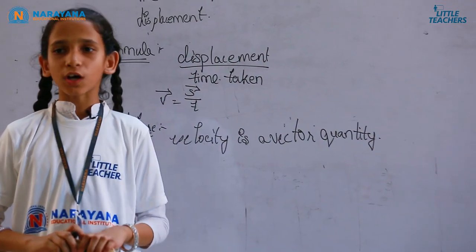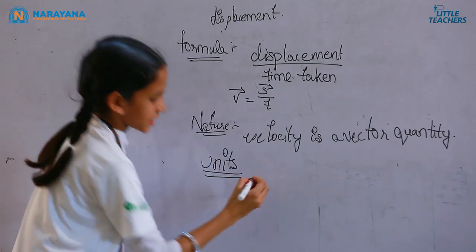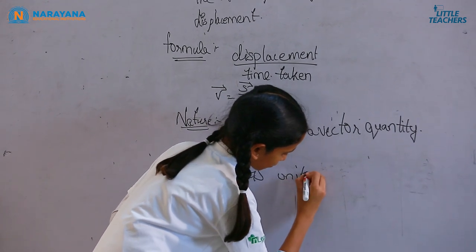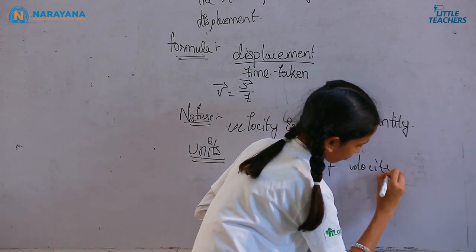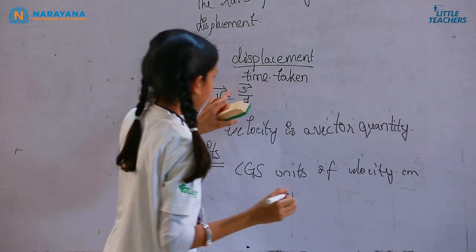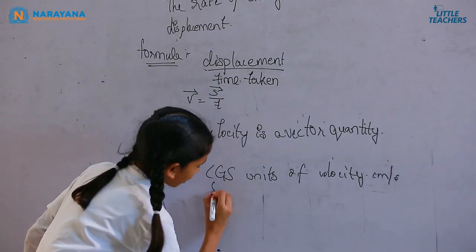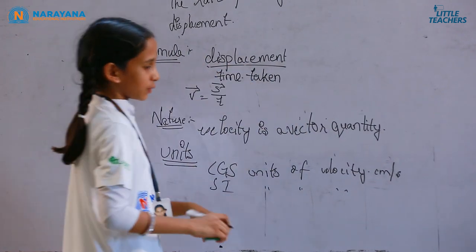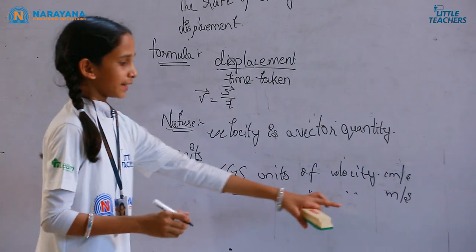Now, the units of velocity. The CGS unit of velocity: since the CGS unit of displacement is centimeter and time is second, the CGS unit of velocity is centimeter per second. The SI unit of velocity: since the SI unit of displacement is meters and time is seconds, the SI unit of velocity is meter per second.